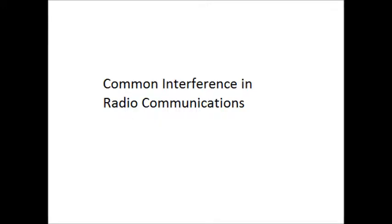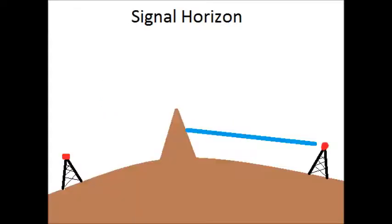The last thing I'm going to cover is the common interference you can have with radio communications. Signal horizon is the biggest problem with line of sight communication. I'm trying to transmit from the right to the left. As you can see, the mountain in the center is blocking my path.